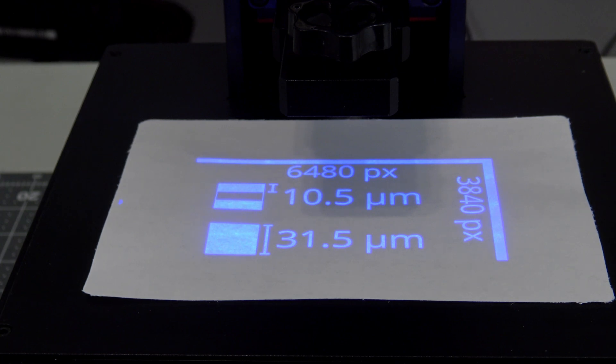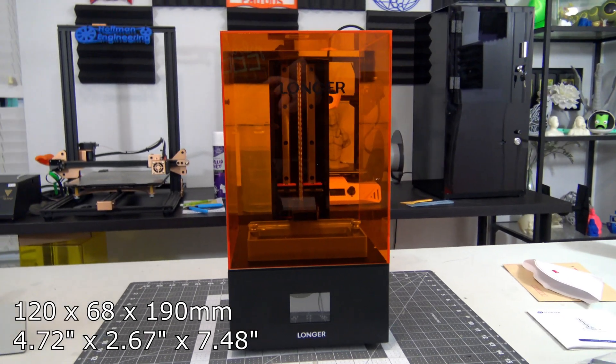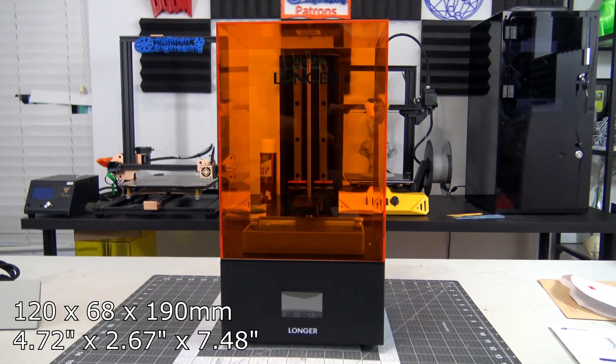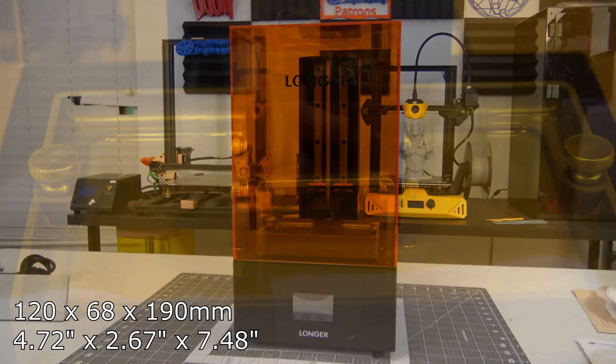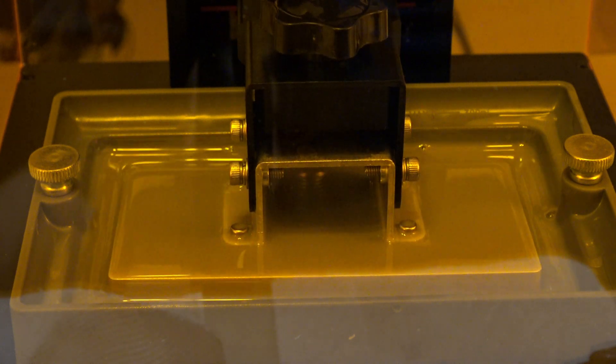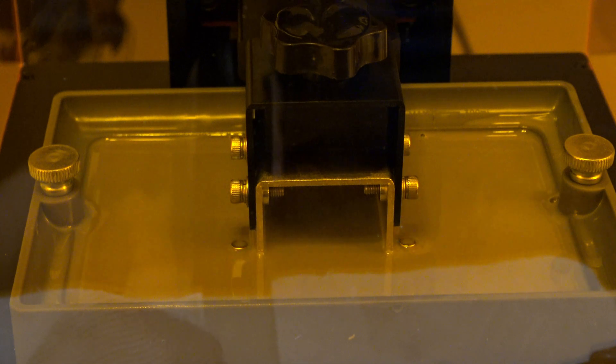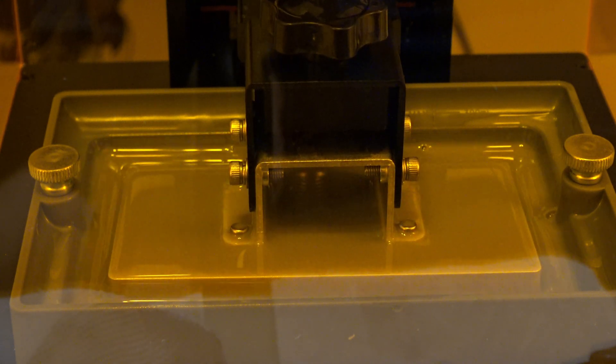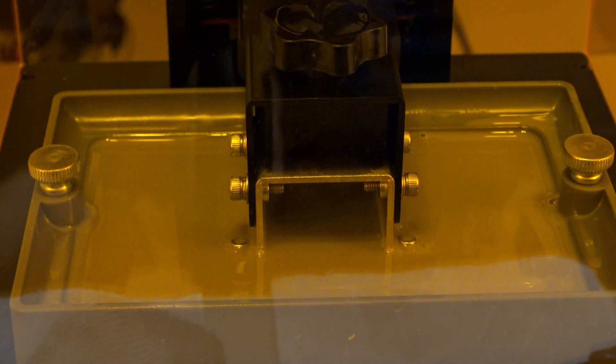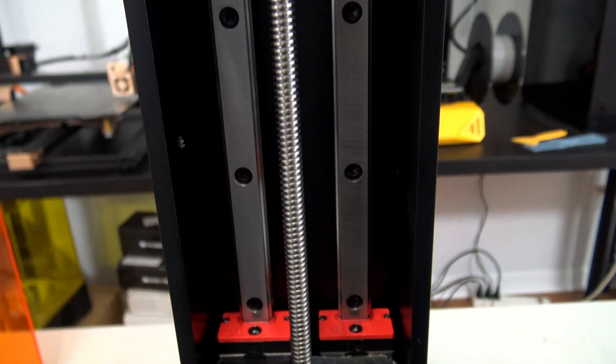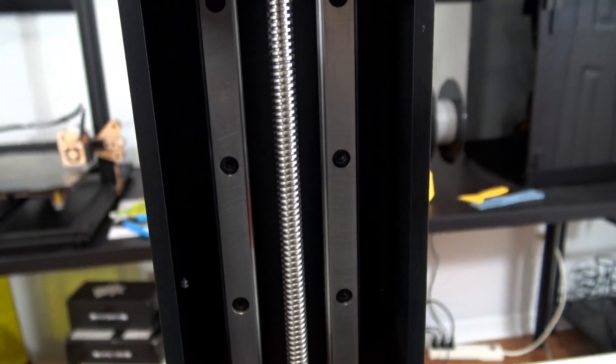I have the mono version with me today, so that is the version I'll be reviewing. The Longer Orange 4K has a print volume of 120 millimeters by 68 millimeters by 190 millimeters. The bed itself has a sloped top surface, so excess resin drains off easily. Four screws allow for bed leveling, and the bed is attached to the Z-axis using a single thumb screw. The Z-axis contains the threaded rod and is supported by dual linear bearings that provide smooth and stable movements.